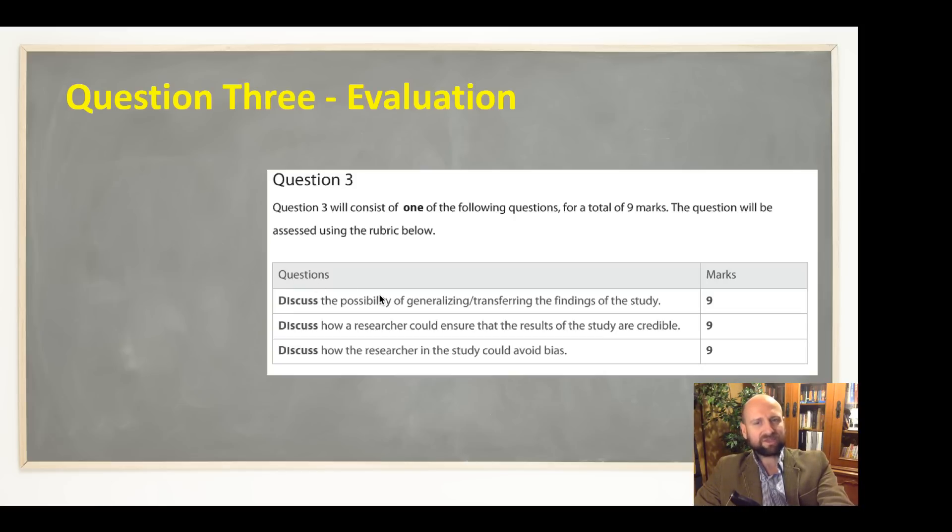Question 3 is evaluation. Just like ethics, only one of these questions will appear from this choice of three: generalizability, ensuring credibility, and avoiding bias. There's a lot of overlap between these concepts. For example, triangulation—if we triangulate, we can help our credibility, we're also going to reduce the chances of bias, and it might help us generalize our findings.